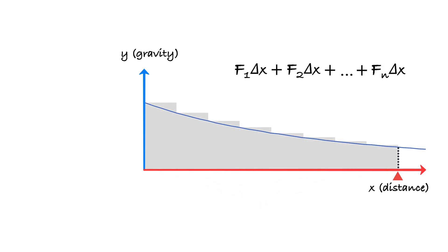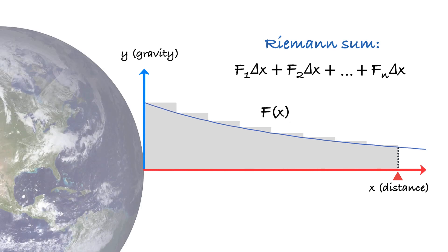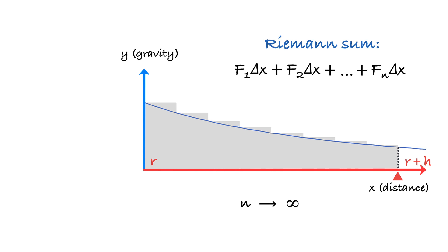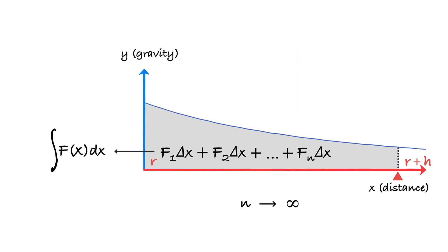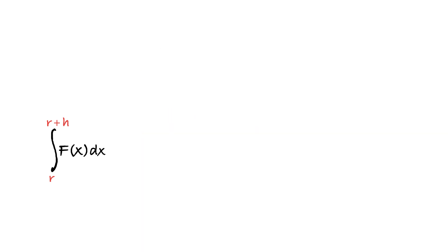But this expression is what is called a Riemann's sum of function f on the interval from r to r plus h. And when n tends to infinity, the sum tends to the integral of f over the distance h. But we know how to take integrals, at least for simple functions. As follows from the fundamental theorem of calculus, our integral equals the difference of antiderivative of f at point r plus h minus antiderivative at point r.